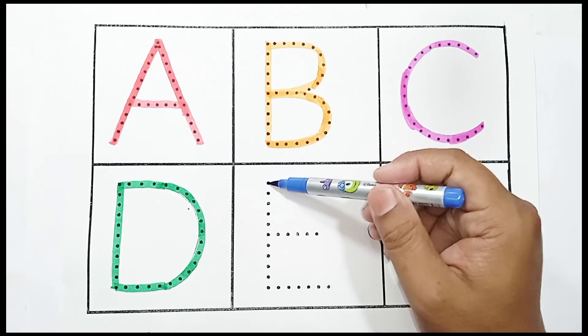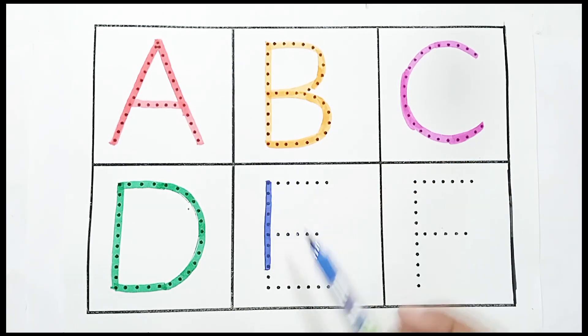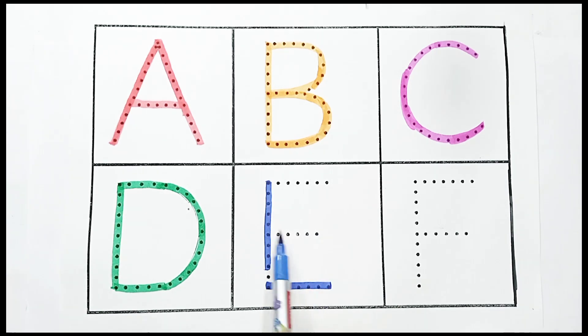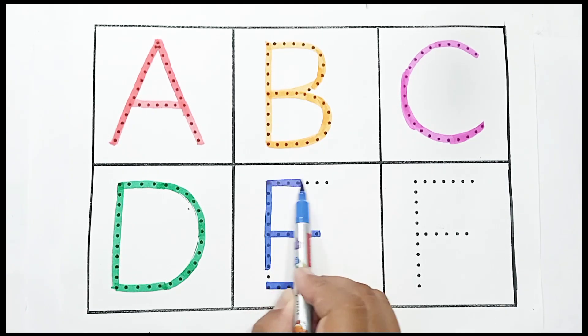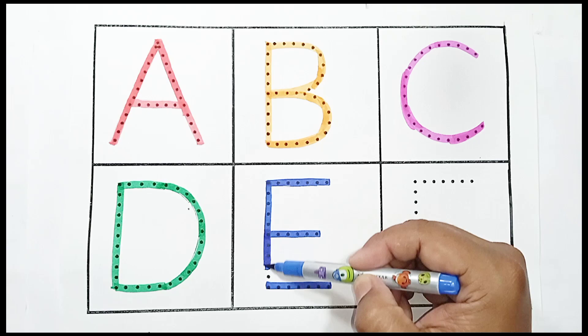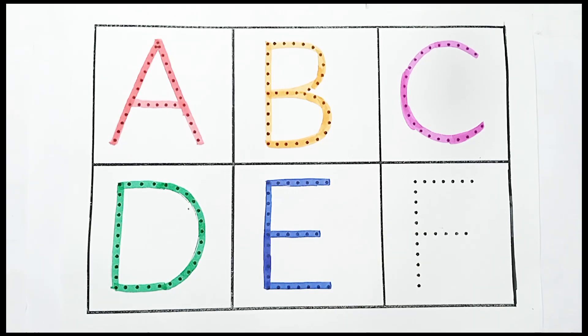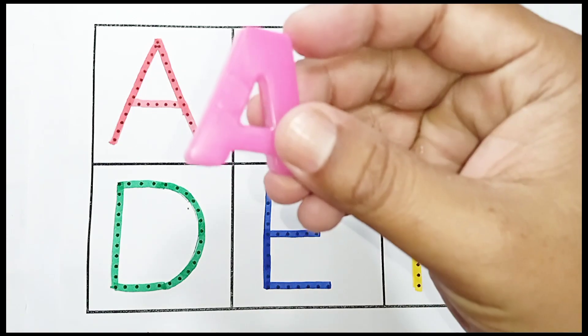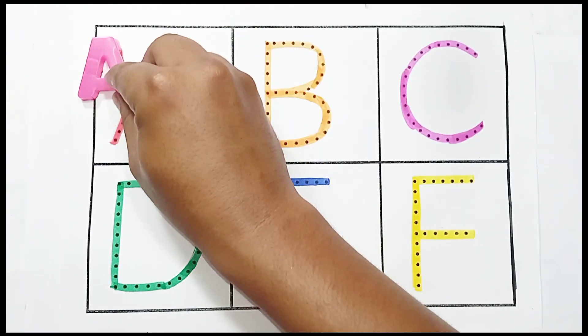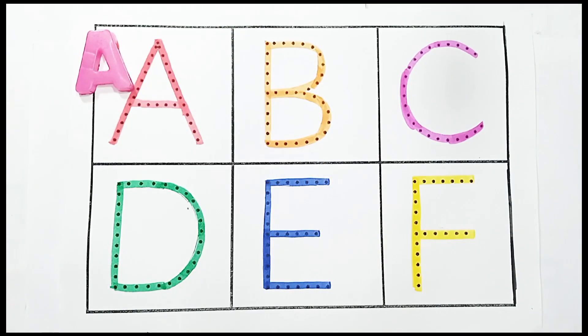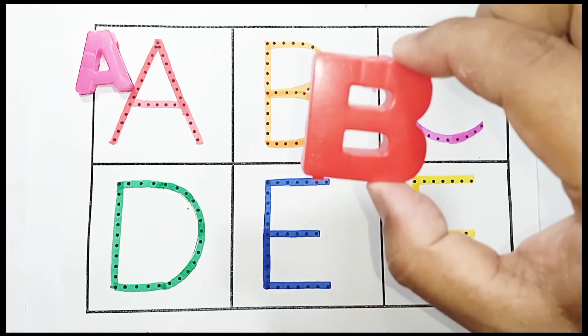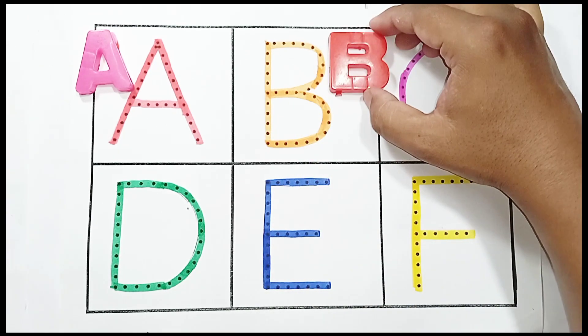Blue color. E, E for elephant, E for elephant. Yellow color. F, F for fish, F for fish. Pink color. A, A for ant, A for ant. Red color. B, B for balloon, B for balloon.